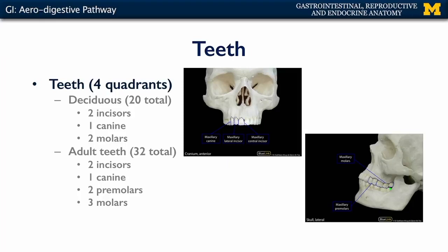Adult teeth typically replace the deciduous teeth. Individuals will typically have 32 teeth. In each quadrant, this corresponds to two incisors — a central incisor and a lateral incisor. The incisors are flanked by the canines, one per quadrant. Canines are then flanked by two premolars, and then there are three molars. Many individuals may have variation with respect to the molars and may only have two. Some individuals opt to have their third molar — the wisdom tooth — removed to prevent crowding.